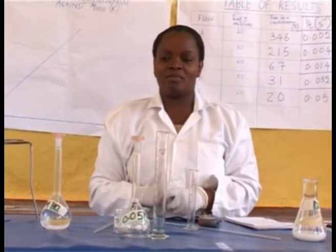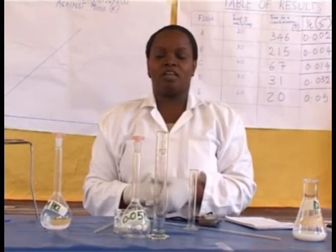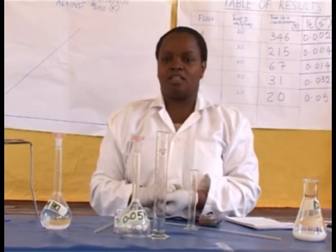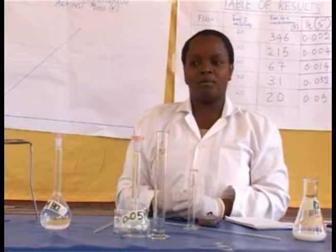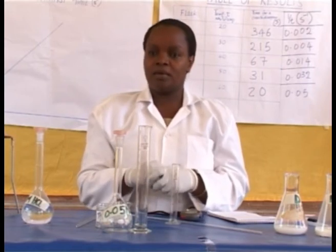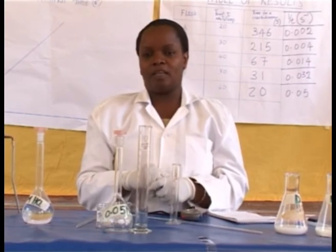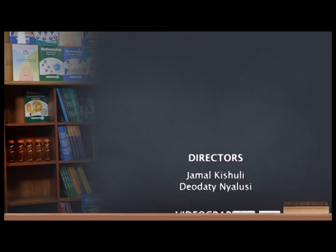The hydrochloric acid reacts with sodium thiosulfate to give sulfur, sodium chloride, water, and sulfur dioxide. It is the fine particles of sulfur that make the reaction mixture turn cloudy. The cross disappears when a certain amount of sulfur is formed; this amount is equal in all reactions. The graph of temperature against time is a parabolic curve, showing that the time for the cross to disappear decreases with an increase in temperature. Therefore, the rate of chemical reaction increases with an increase in temperature.